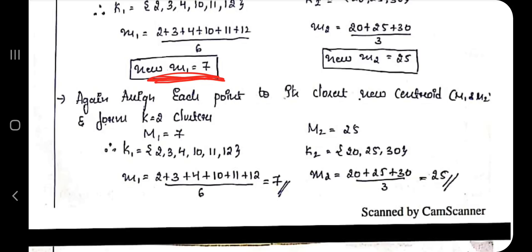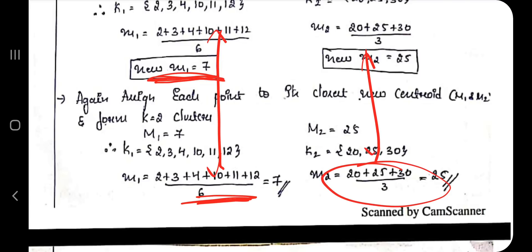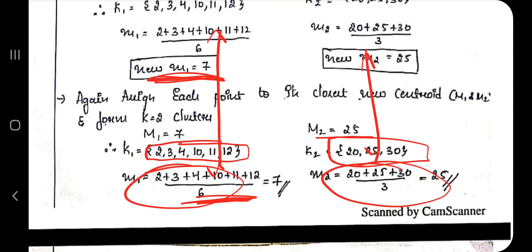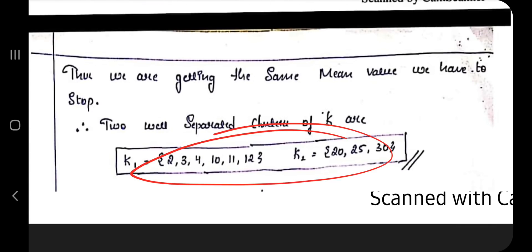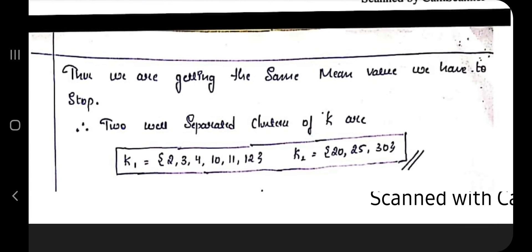Keep iterating — recalculate means, reassign elements — until the mean values stop changing between iterations. For example, if M1 comes out as 7 in two consecutive iterations and the cluster membership doesn't change, the algorithm has converged. The final two groups are your clusters, and those are your answer.